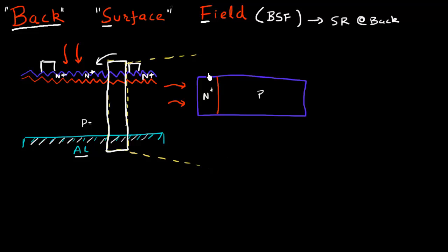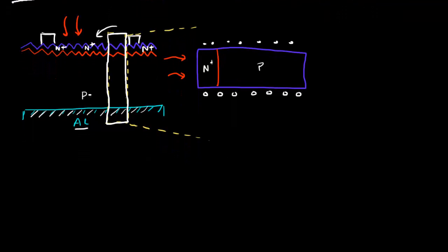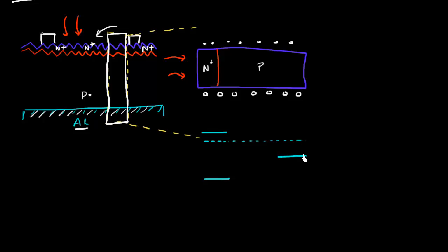The light would be shining from the top, and that essentially produces these electron and hole pairs throughout the solar cell. To understand any semiconductor device, it's always best to draw the band diagram. So let me draw the band diagram of this solar cell.